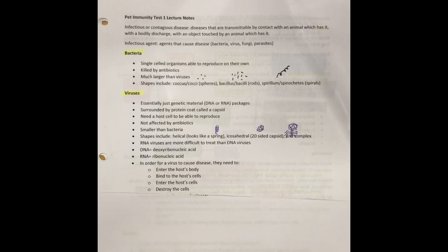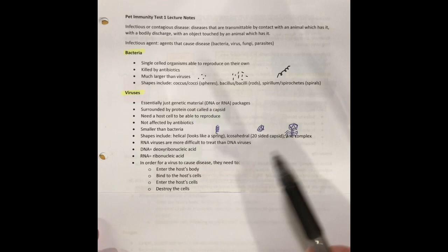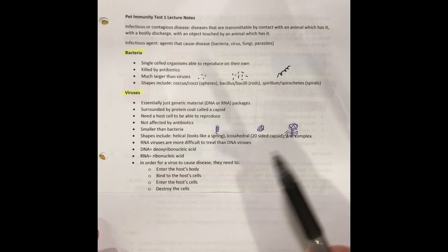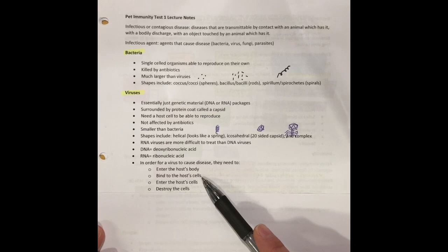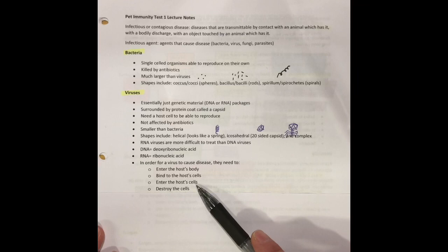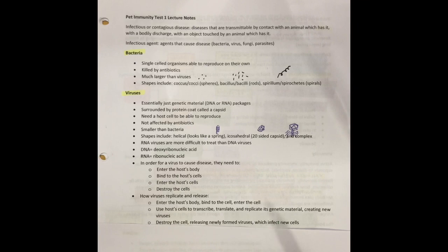In order for a virus to cause disease, there are a few steps it needs to do. Number one, it needs to enter the host body — that's where we start to talk about transmission methods. Once inside the host's body, that virus needs to bind to the host's cell. Then it needs to get inside the cell. Once inside, it's going to do some replication, and eventually it is likely going to destroy the cell.